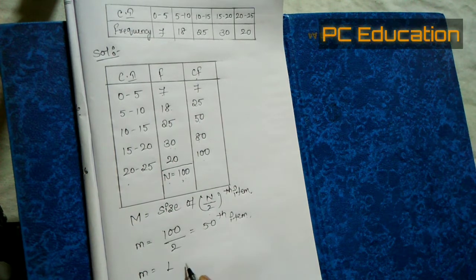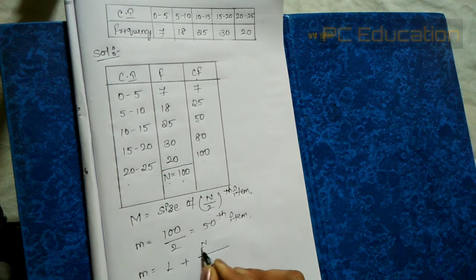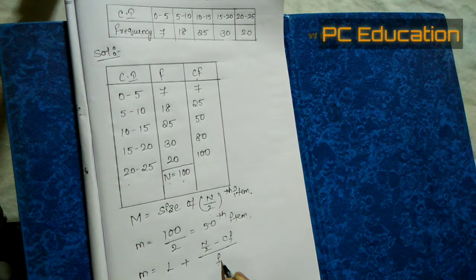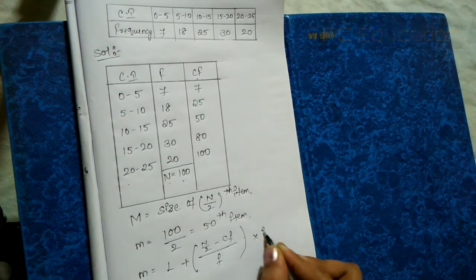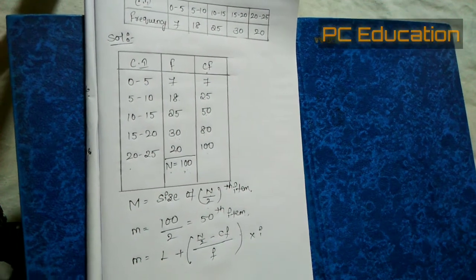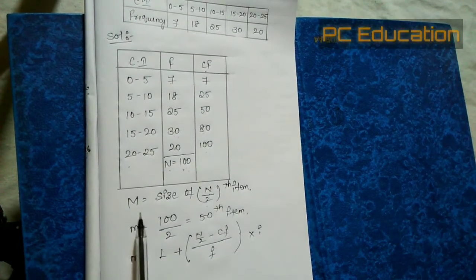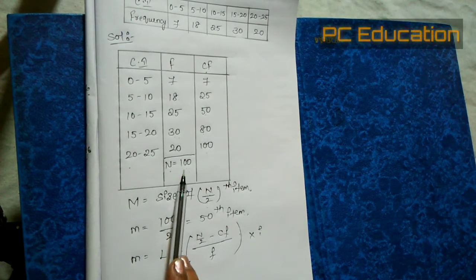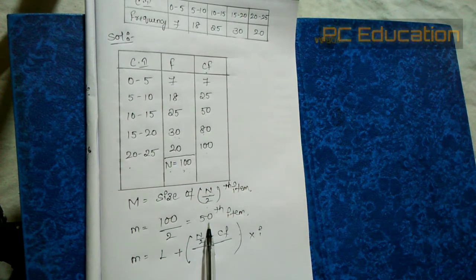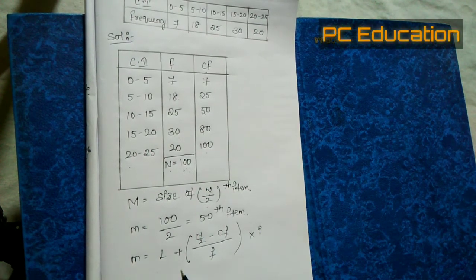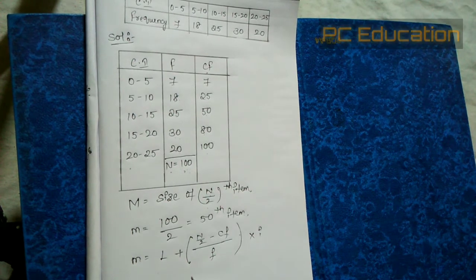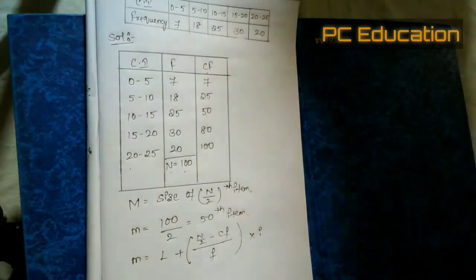After finding the 50th item, we apply the second formula: median = L + (N/2 − CF) / f × i. First we applied N/2 to get the 50th item, and now we apply this formula to calculate the actual median value.